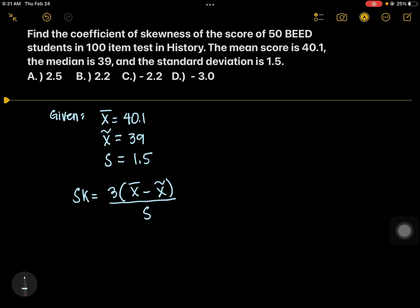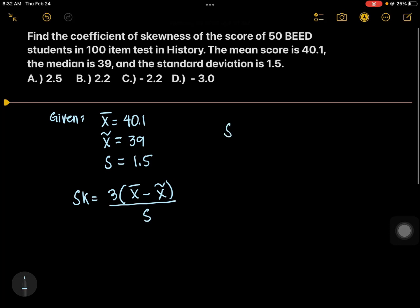We need to substitute or plug in the given to the formula. The coefficient of skewness is 3 times our mean is 40.1 minus the median, 39, all over standard deviation, 1.5.